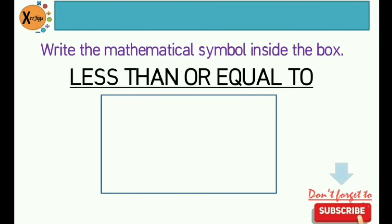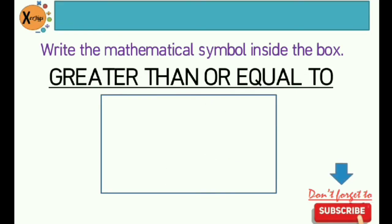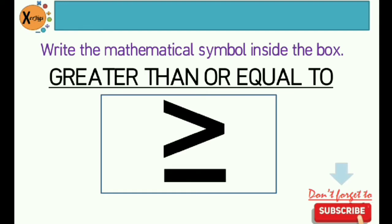The third mathematical symbol is less than or equal to. Since we already know the less than symbol, we just need to draw a horizontal line under it. So this is the mathematical symbol of less than or equal to. And lastly, greater than or equal to — same thing, you just have to draw the greater than symbol plus a horizontal line under it.